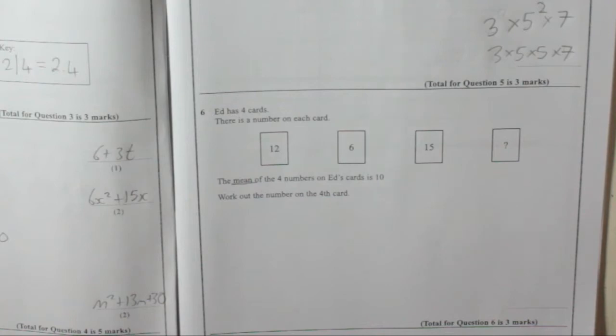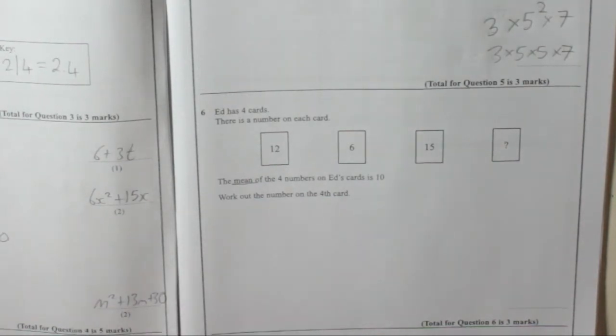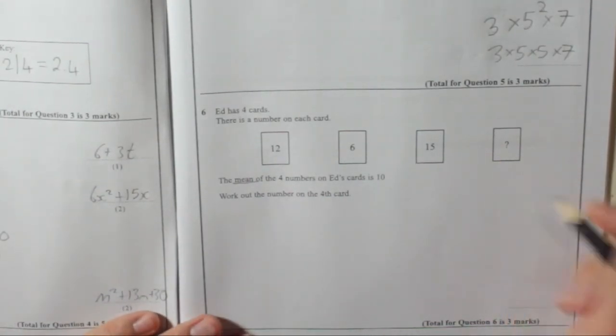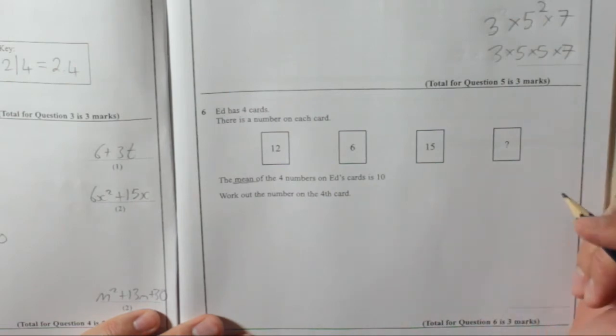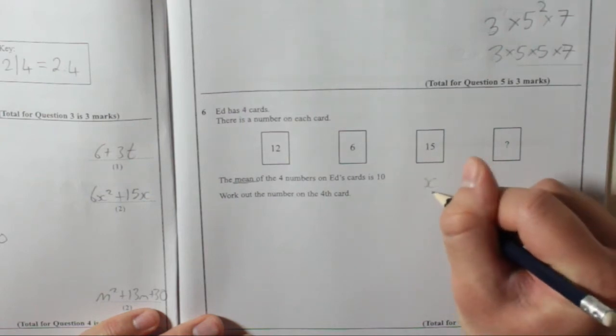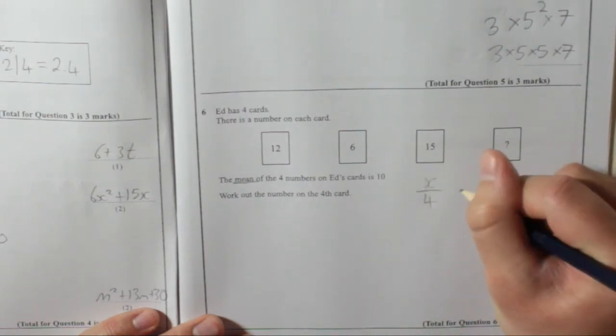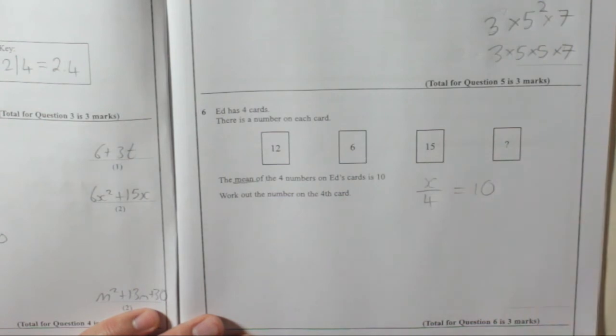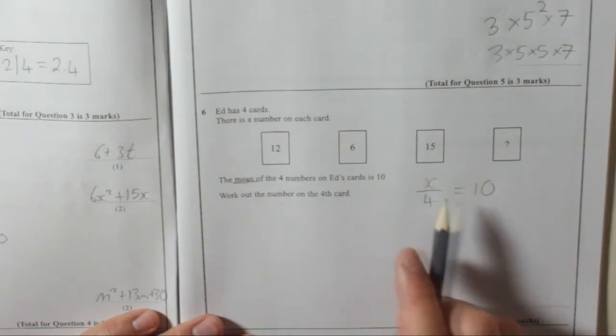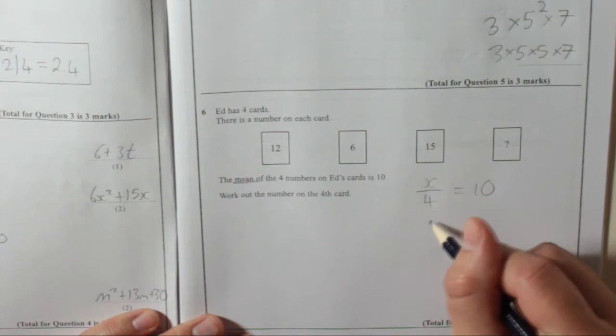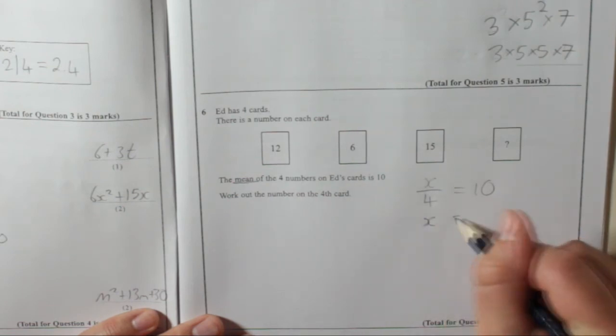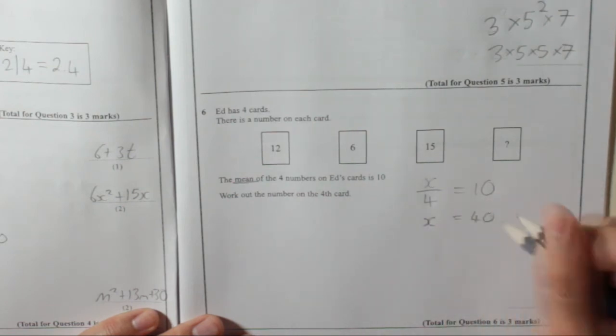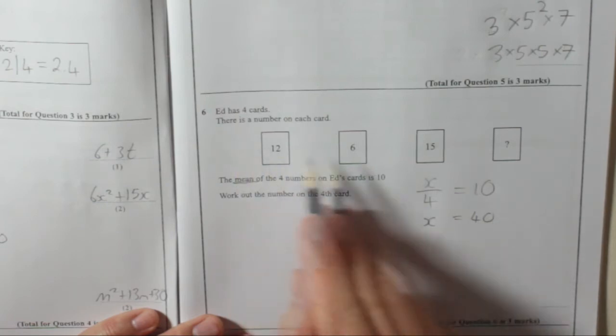So you could do an equation if you want. You add them all up - we don't know what it is. When you divide by four, you get ten. So x divided by four equals ten. Well, you want to solve that. Multiply by four gives you x. Multiply by four gives you forty. That means that's the total. That means they add up to forty.